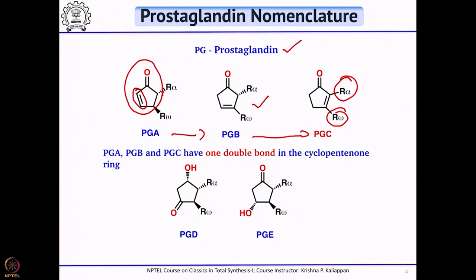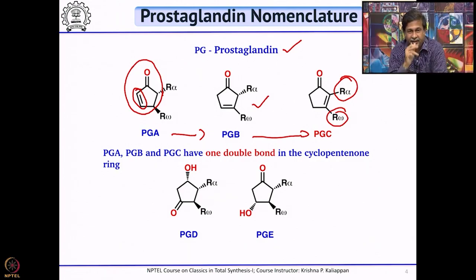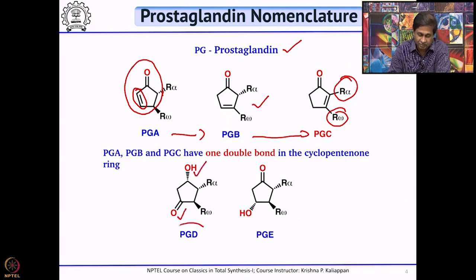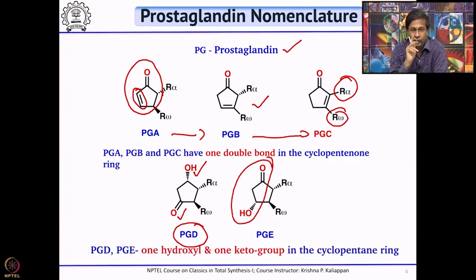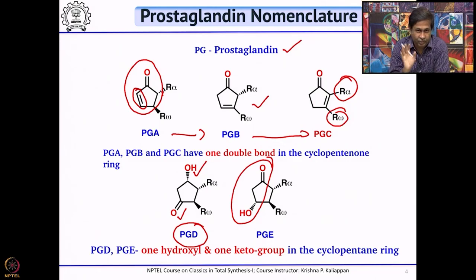What are PGD and PGE? Here the double bond is replaced — you do not have a double bond; instead, you have a hydroxyl group. The hydroxyl group is a beta-hydroxy ketone, like an aldol. If the ketone is at one position and the hydroxyl is adjacent, then it is PGD. If it is the opposite arrangement, then it is called PGE. So PGA, PGB, PGC have cyclopentenone, while PGD and PGE have one hydroxyl and one ketone — a beta-hydroxy ketone or aldol — in the cyclopentane ring.